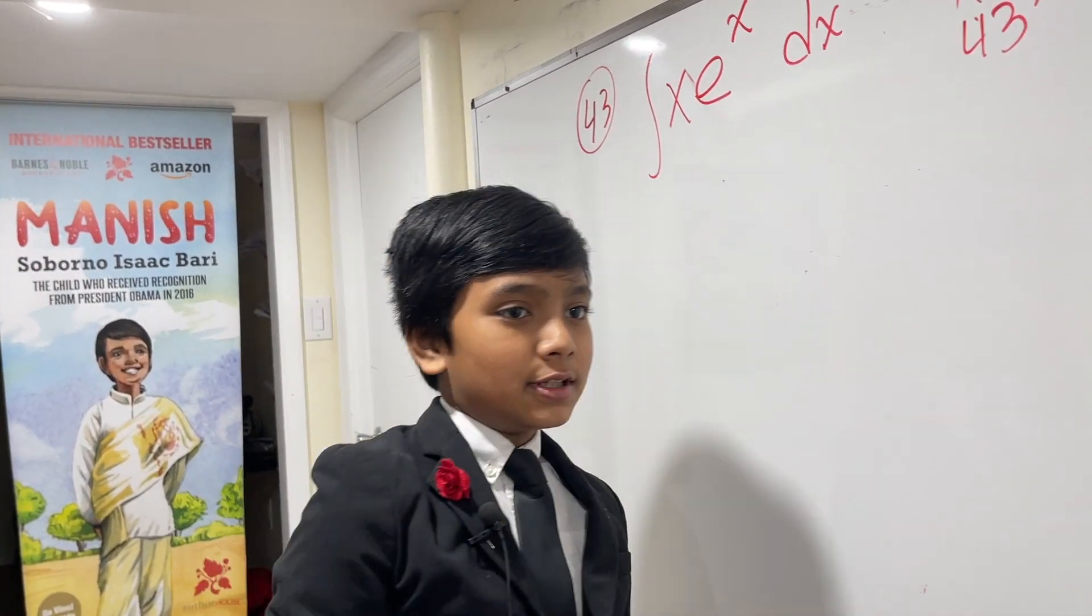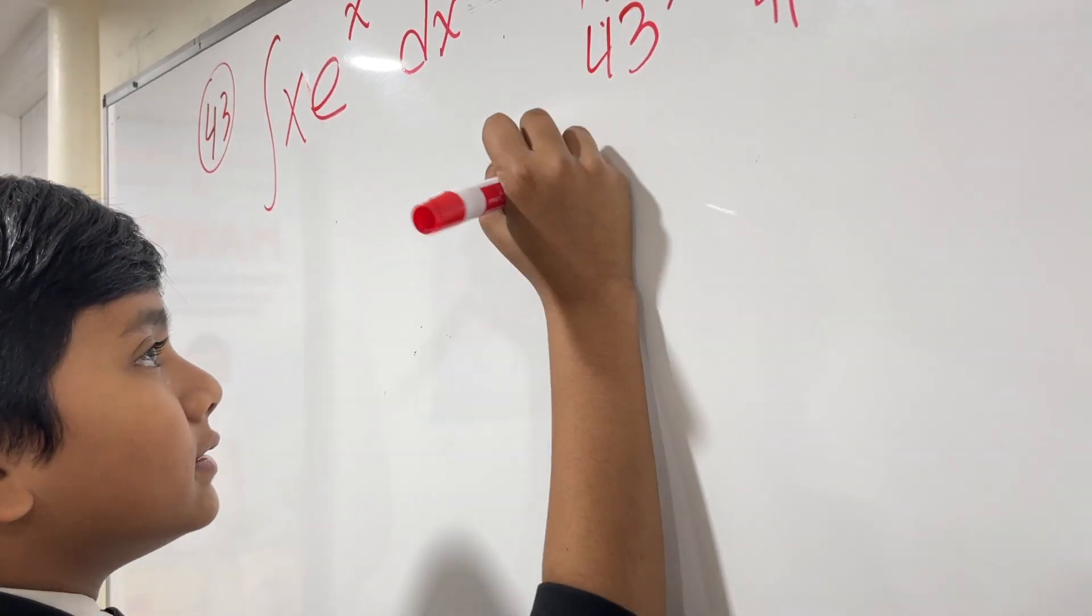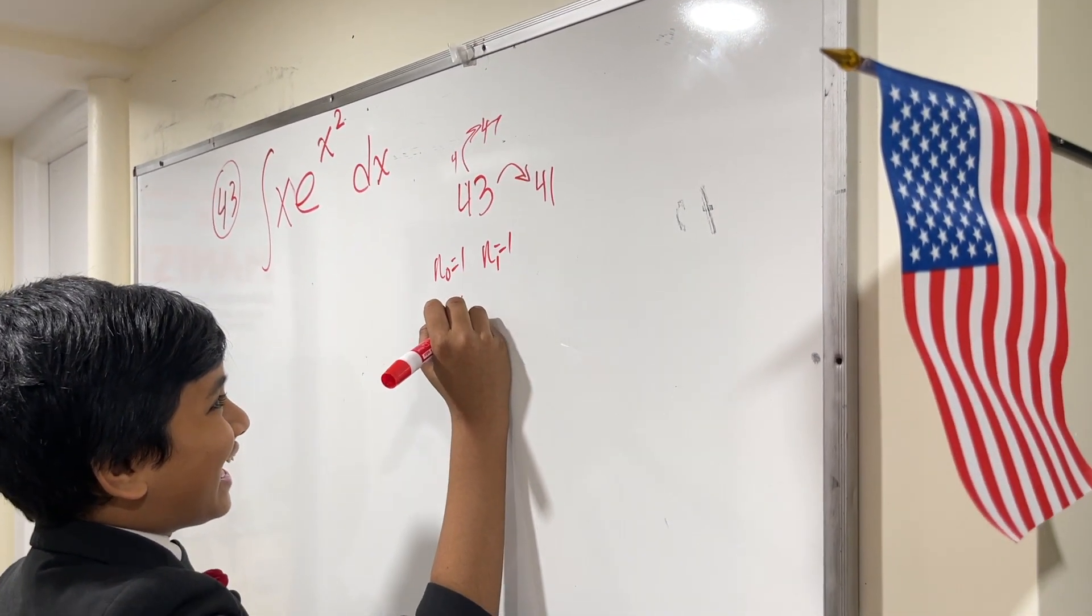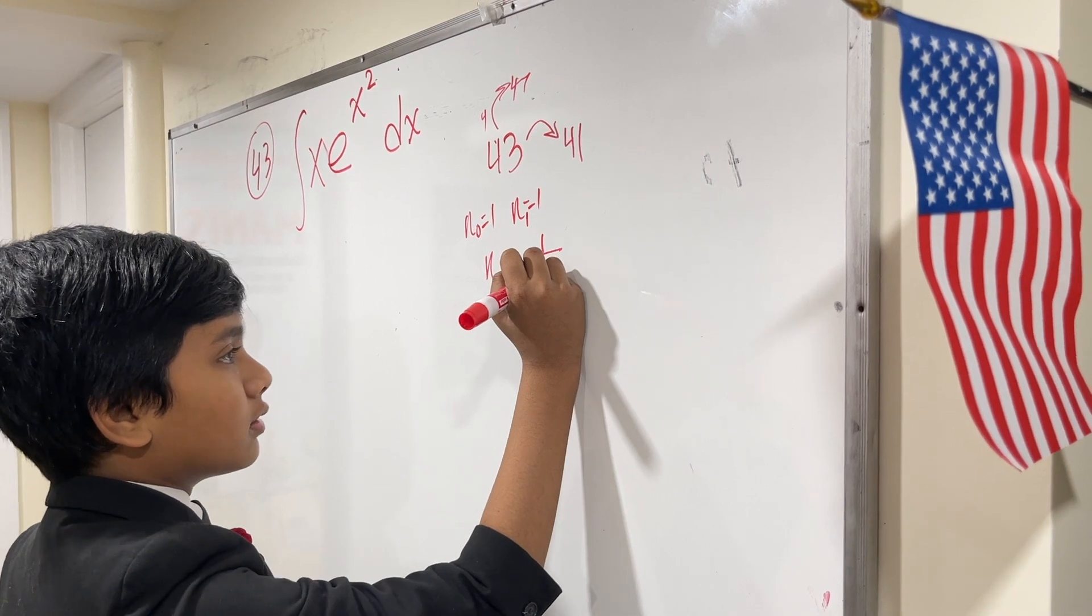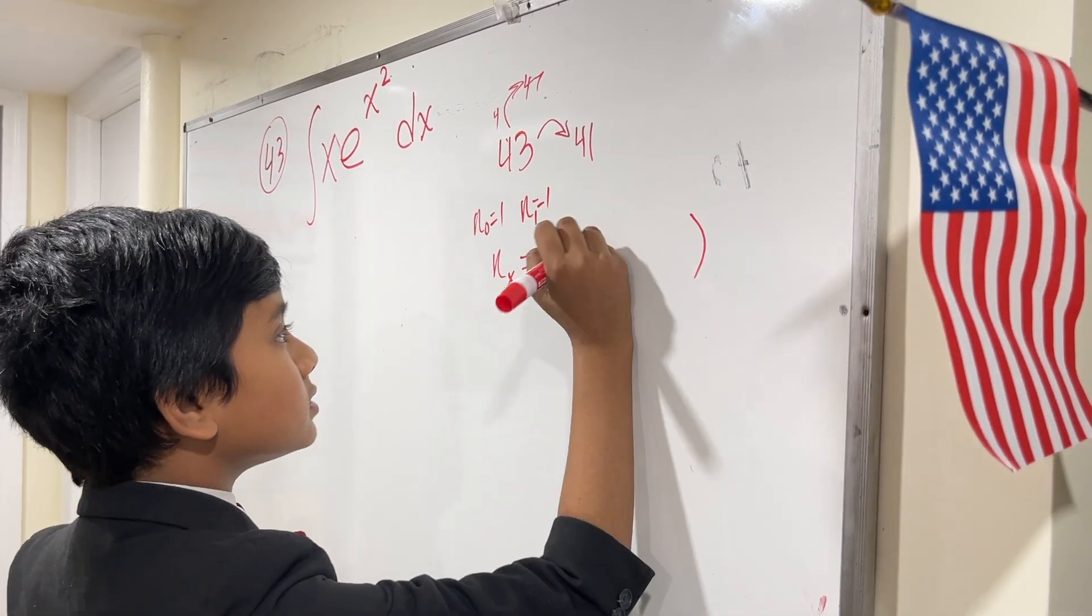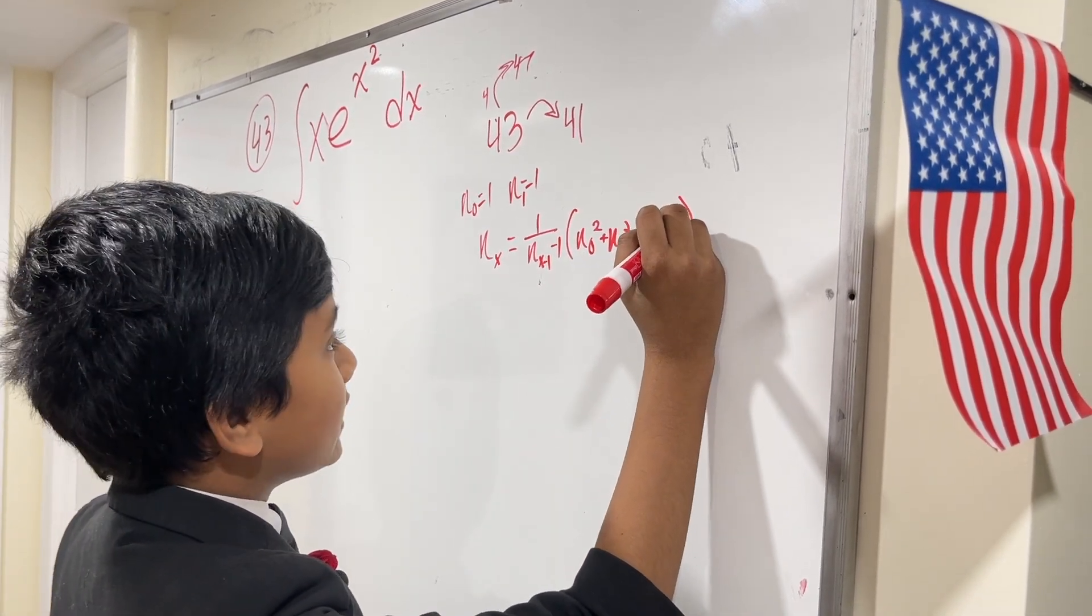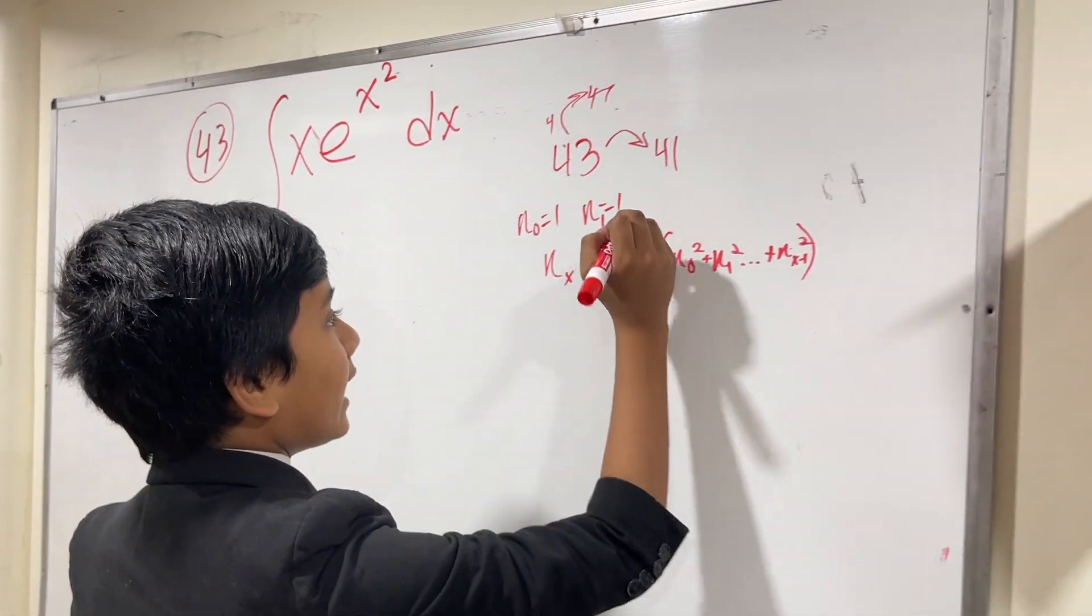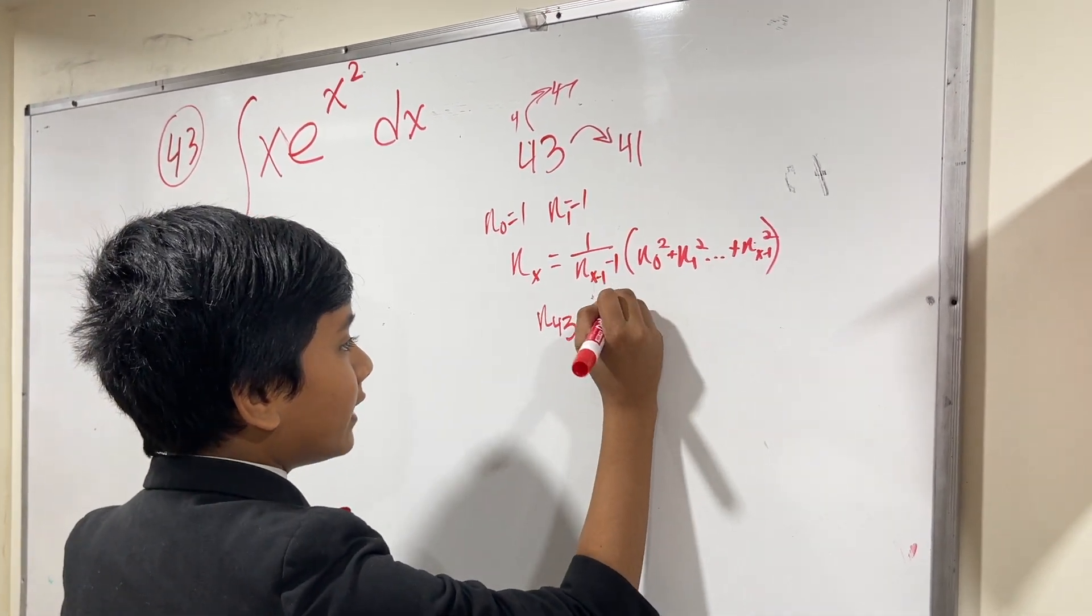And also, there's actually a sequence, I believe, where you have n0 is 1, n1 is 1, and n to the x is equal to 1 over n to the x minus 1 minus 1 times n to the 0 squared plus n to the 1 squared, etc., plus n to the x minus 1 squared. Now, this sequence is cool because n to the 43 is actually the first non-integer in the sequence.